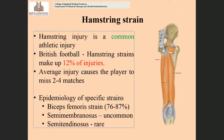The fourth common injury in the lower extremity is hamstring strain, which comes under acute sports injuries. Hamstring strain is a common athletic injury — especially in runners and marathon players who perform running-type activities. In British football, hamstring strains make up 12% of injuries, and this injury causes the player to miss two to four matches.